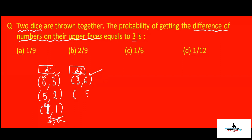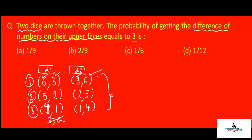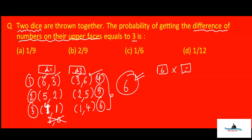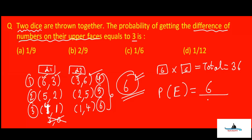So counting all the possible combinations: (6,3), (5,2), (4,1), (3,6), (2,5), (1,4) — there are six favorable combinations. The total number of combinations when two dice are thrown is six times six, which is 36. So the probability is six upon 36, which simplifies to one upon six. That is the answer for part C.